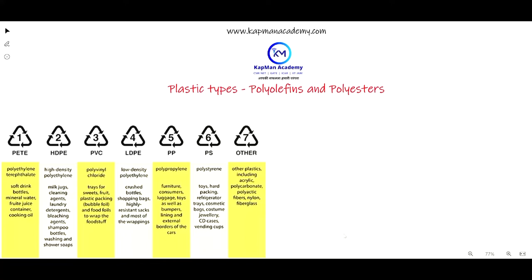Hello students, welcome back to Capnin Academy. Today we are going to talk about one of the important types of plastics used in the food industry, known as polyolefins and polyesters. So polyolefins, as I already mentioned in my earlier classes, are categorized into two categories.